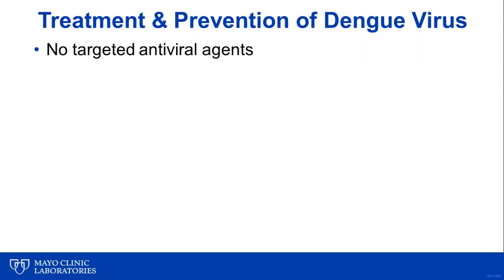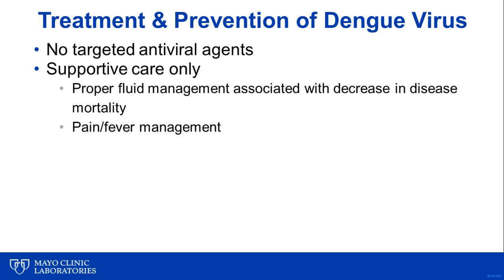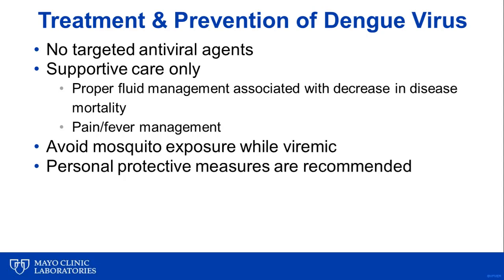Finally, as with all arboviruses, there are no targeted antiviral agents against dengue virus infection, and treatment is entirely supportive. Clinical management includes proper fluid balance, which is critical for patients with dengue hemorrhagic fever and can decrease mortality by 50 to 100-fold. Regarding infection prevention, it is important for patients who are viremic with dengue virus to avoid mosquitoes during that period in order to minimize infection of naive mosquitoes. Personal protective measures against mosquito exposure are also critical, including use of mosquito repellents and wearing long-sleeved shirts and pants when venturing into areas with a high mosquito burden.